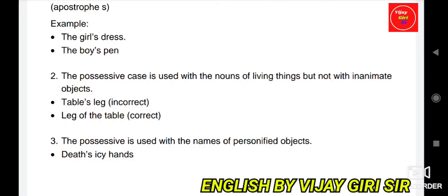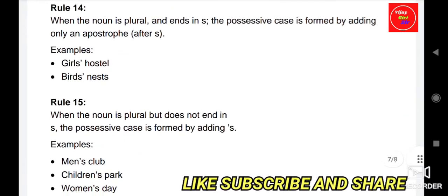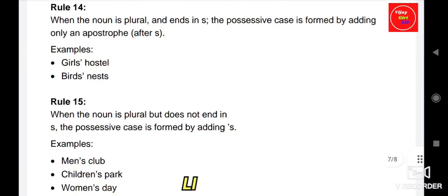The possessive is used with the names of personified objects — for example, 'Death's icy hand', where death has been personified. Rule 14: When the noun is plural and ends in S, the possessive case is formed by adding only the apostrophe after S. For example, 'girls'' (girls' hostel) and 'birds'' (the birds' nest).